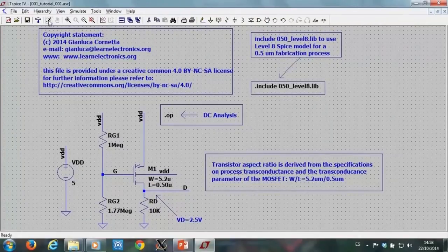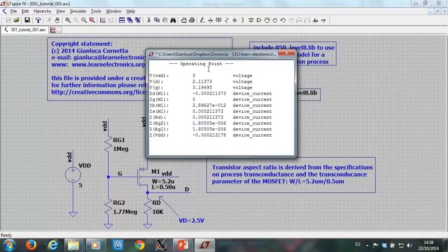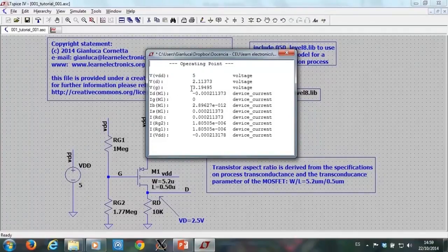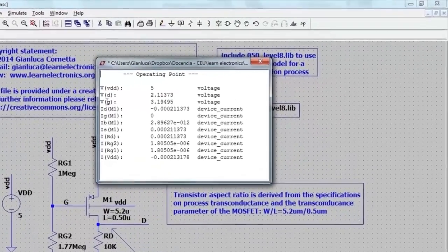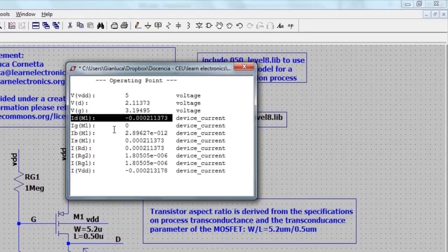To run the analysis, I need to use the running man button. After running the analysis, a new window pops up with the DC currents and voltages computed in all the circuit nodes. I am interested in the drain voltage. I can see that the drain voltage is 2.11 volts approximately, and the drain current is 0.2 mA approximately.